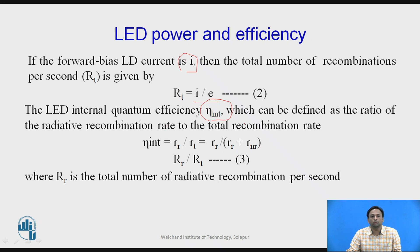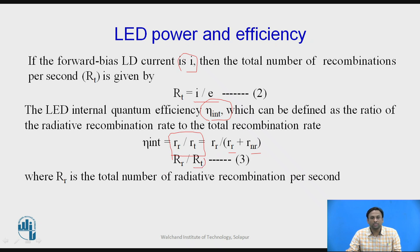For spontaneous emission, excess electrons coming down emit energy in the form of light and heat. Emission in the form of light is known as radiative recombination, and emission as heat is non-radiative recombination. Therefore, internal efficiency can be written as: η_int = R_r / (R_r + R_nr) = R_r / R(t), where R_r is the total number of radiative recombinations per second.